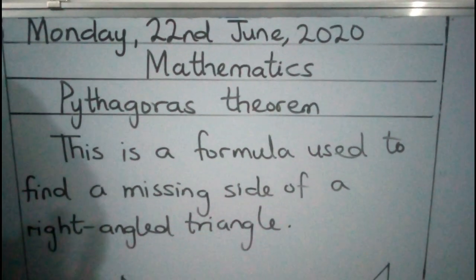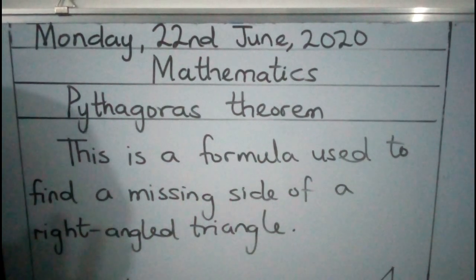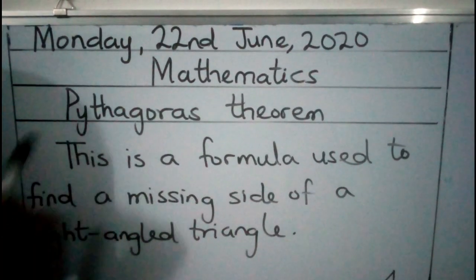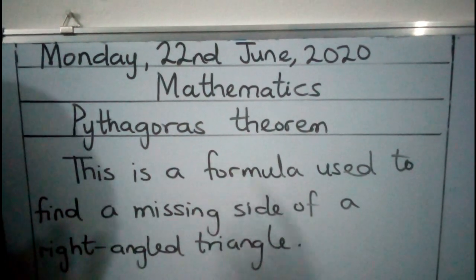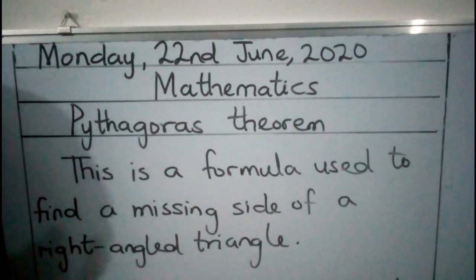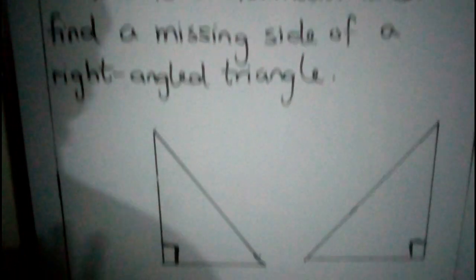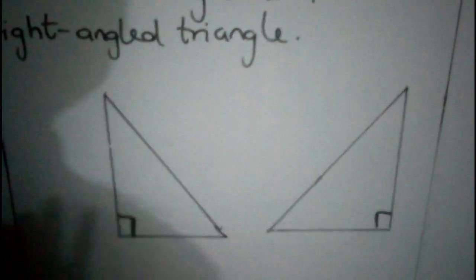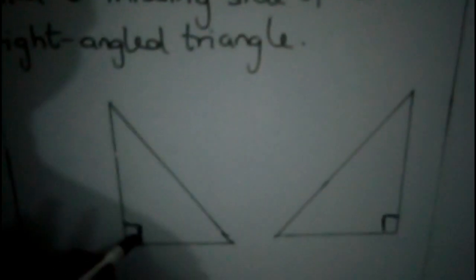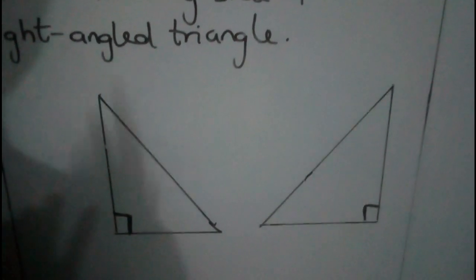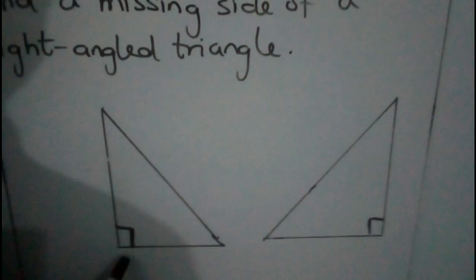So any triangle whose one of the three angles is 90 degrees is a right-angled triangle. Pythagoras Theorem is specifically used to find a missing side of a right-angled triangle, not any other triangle. If you look at the board here, this is an example of a right-angled triangle. You can see there are three angles, and this one happens to be the right angle — this is the symbol for right angle, and that means 90 degrees. So one of the three angles is a right angle, and that makes it a right-angled triangle.